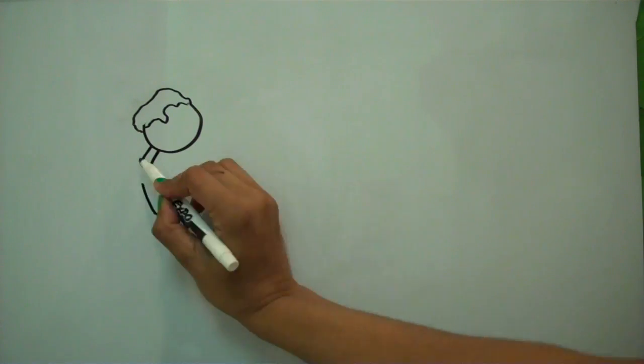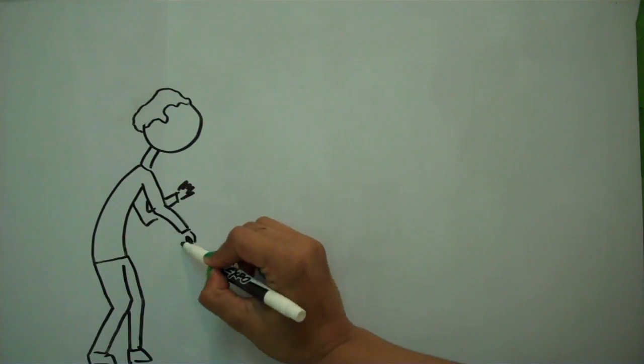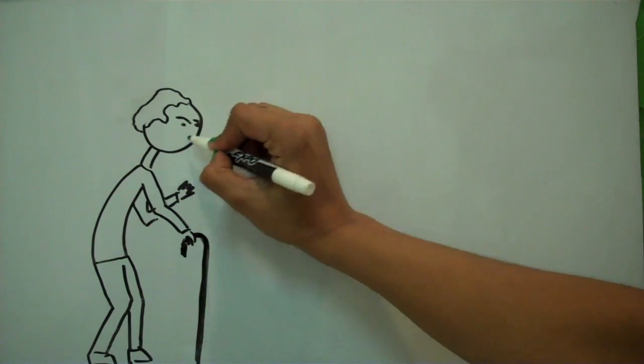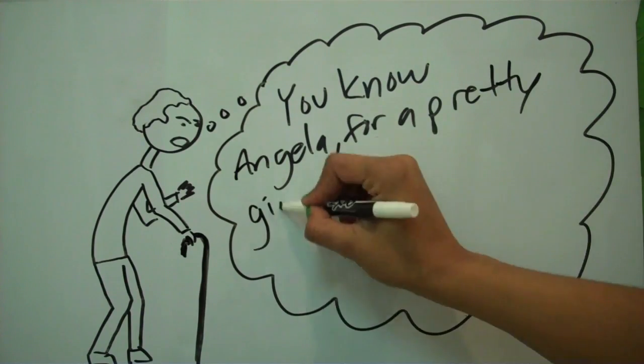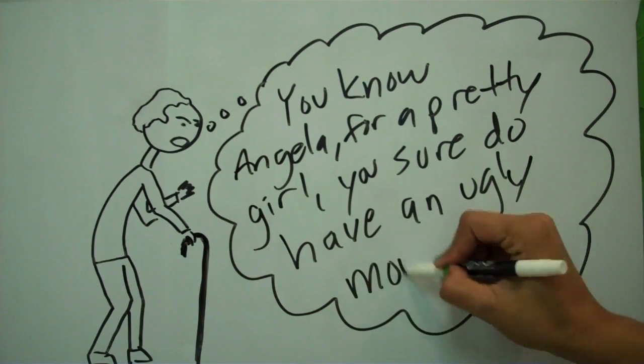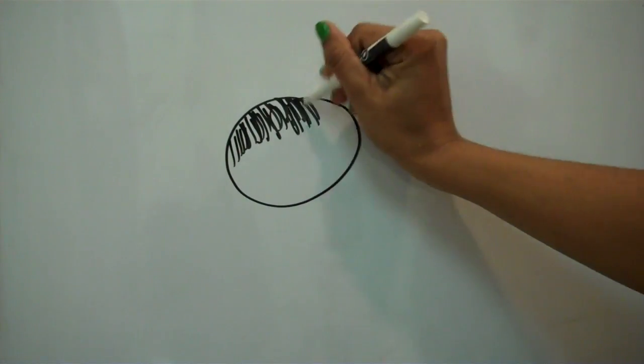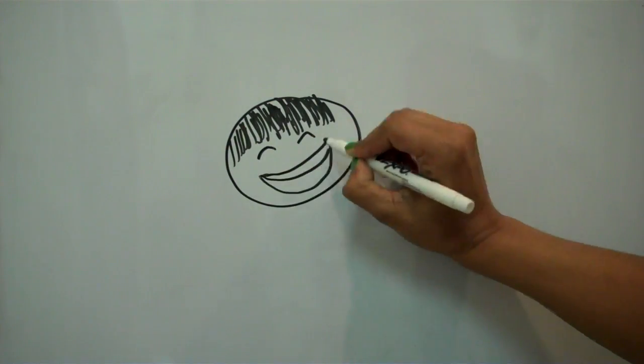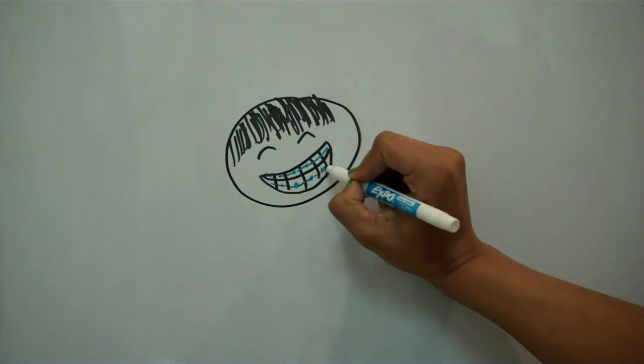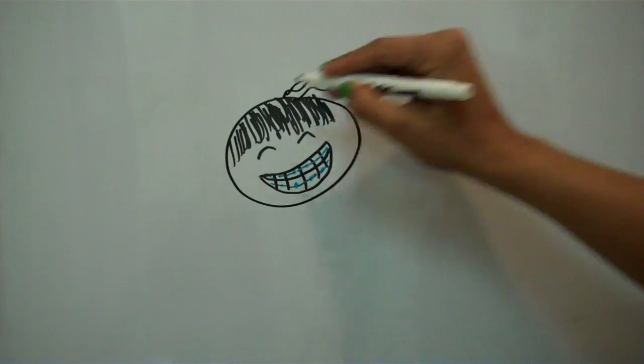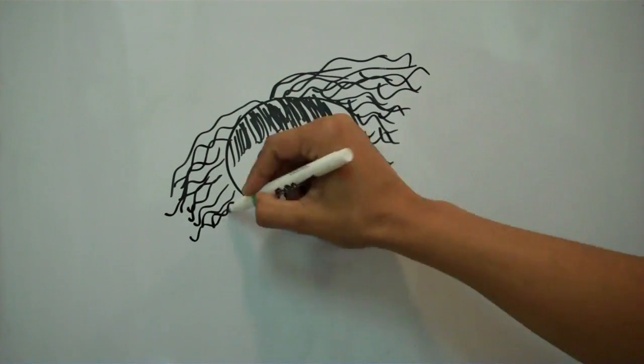Growing up, I didn't know any of my outside family. So when my granddad came back into my life when I was a little older, one of the first things he said was, Angela, for a pretty girl, you sure do have an ugly mouth. And it made me feel awful. And any time he saw me, he would just make comments about my teeth. So I started covering my mouth when I'd smile or I'd smile from my, quote, good side.